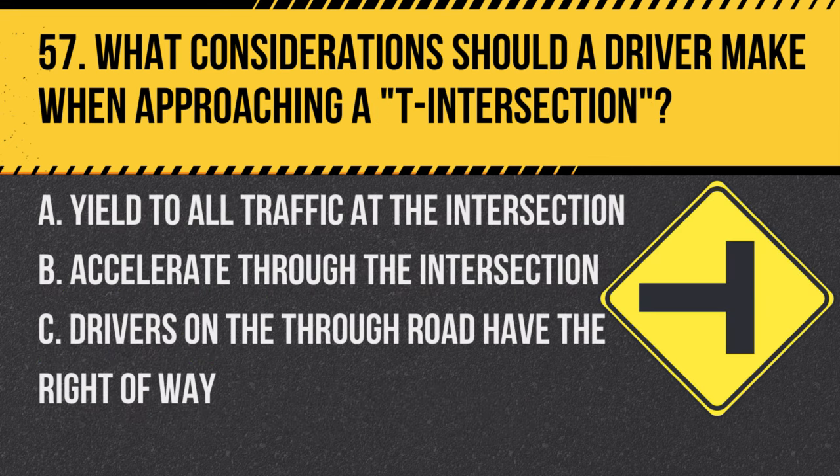Question 57. What considerations should a driver make when approaching a T intersection? A. Yield to all traffic at the intersection. B. Accelerate through the intersection. C. Drivers on the through road have the right of way. Answer: A. Yield to all traffic at the intersection. At a T intersection, drivers must yield to vehicles on the through road.